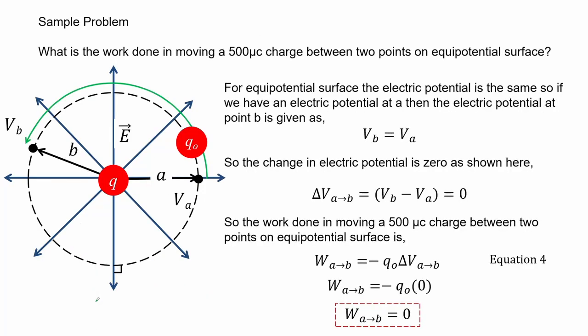Here we have another sample problem: what is the work done in moving a 500 microcoulomb charge between two points on an equipotential surface? For equipotential surfaces the electric potential is the same, so if we have electric potential at A, then the electric potential at point B is equal. So the change in electric potential is zero. Therefore the work done in moving a 500 microcoulomb charge between two points on an equipotential surface is equal to zero.